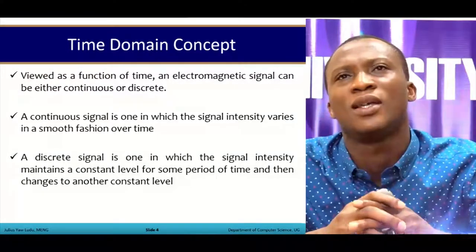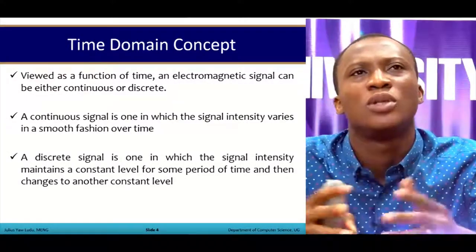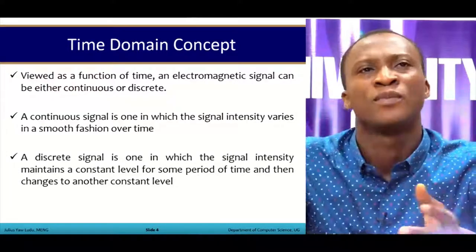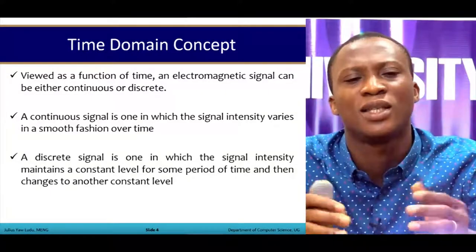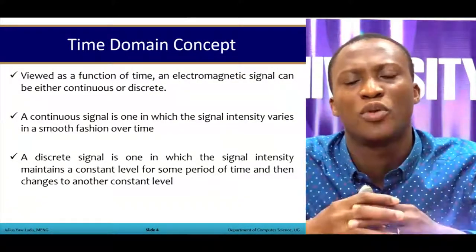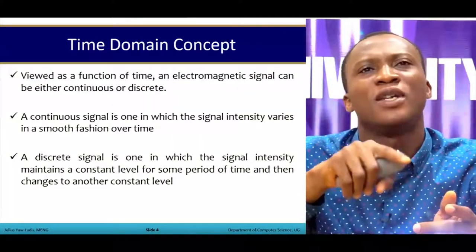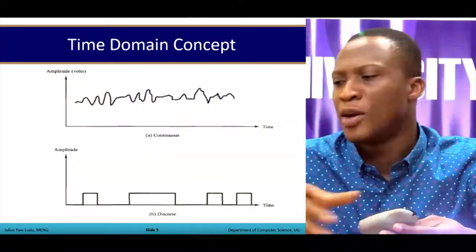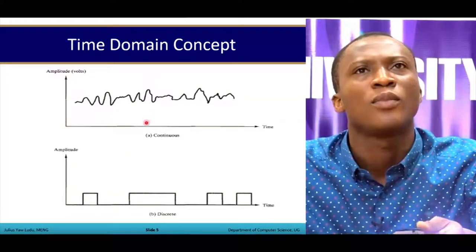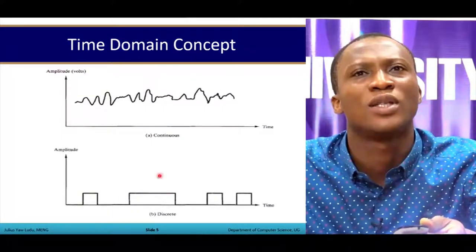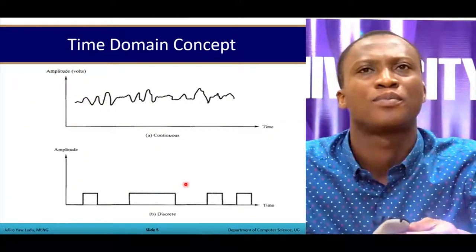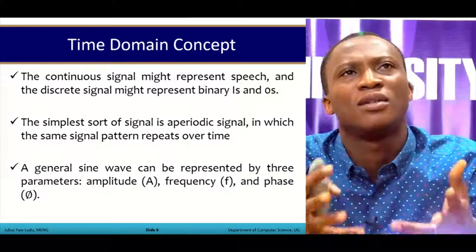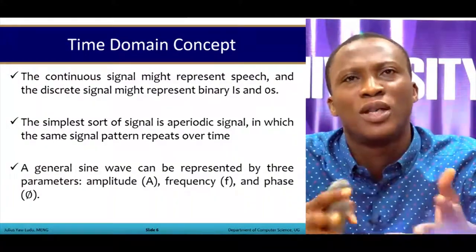A continuous signal is one in which the signal intensity varies in a smooth fashion over time, looking like a curve, a wave, or a sine wave. A discrete signal is one in which the signal intensity maintains a constant level for some period of time, appearing as a bar chart or histogram. A continuous time domain concept represents speech, while a discrete time domain concept represents binary values — zeros and ones.